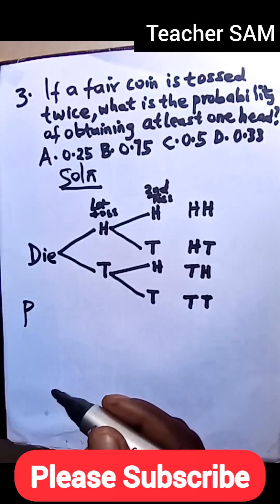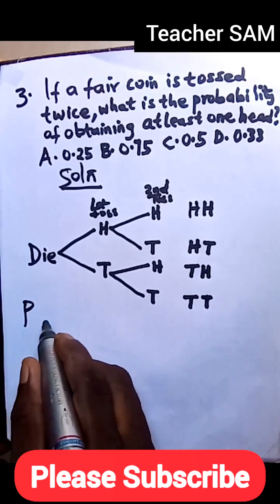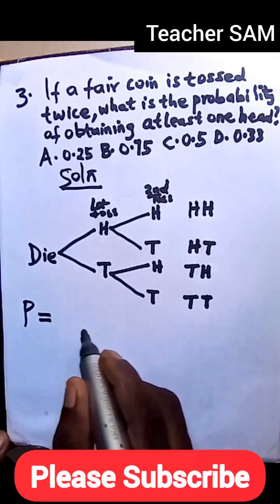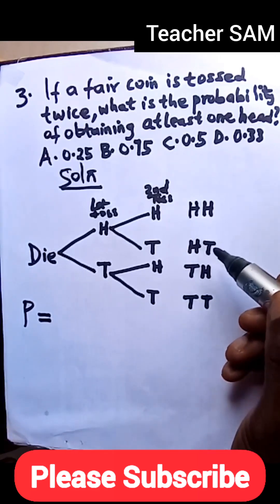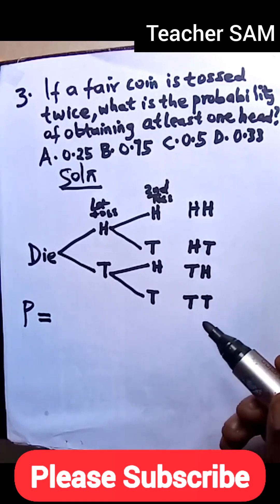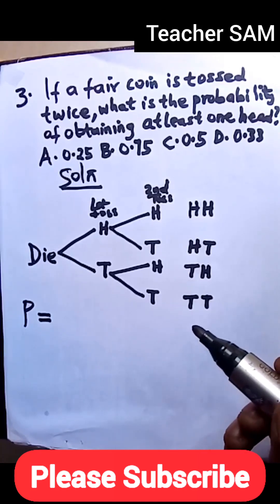So the probability of tossing a coin twice and we get at least one head will be equal to—don't forget, we have four results: one, two, three, four. We have four results.